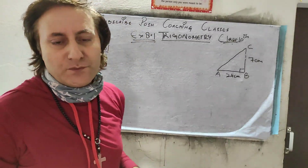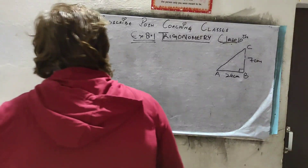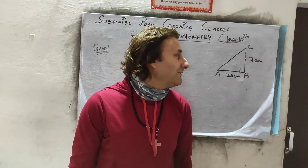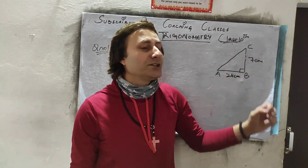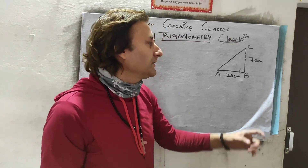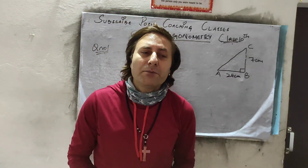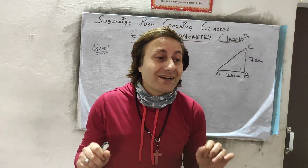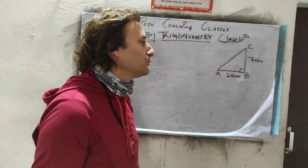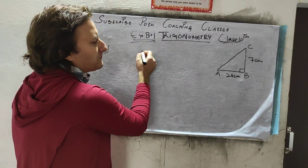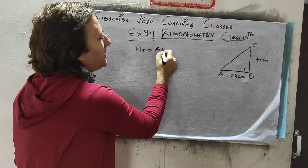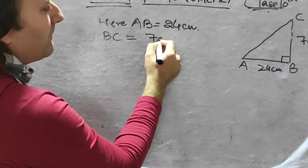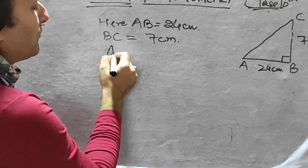Before finding what is asked, whenever we are solving a trigonometric question and we have a triangle with two sides given and one side missing, we need to find the third side. The missing side here is the hypotenuse, which is the longest side of a right angle triangle. So AB is 24 cm, BC is 7 cm, and we need to find AC.